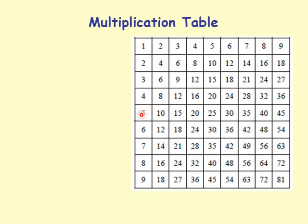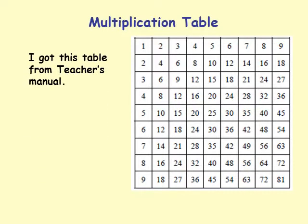This is the table of 5: 5 times 1 is 5, 5 times 2 is 10, 5 times 3 is 15, 5 times 4 is 20, and so on.